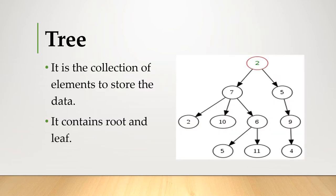What is a tree? It is a collection of elements to store the data, and it contains one root node and a number of leaf nodes. Here is the example: 2 is the root node and 7, 5, 2, 10, 6, 9, 5, 11, 4 are the leaf nodes.